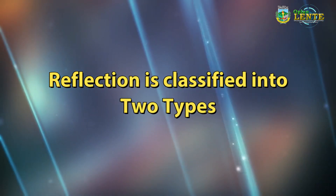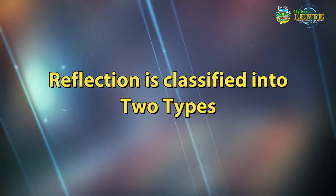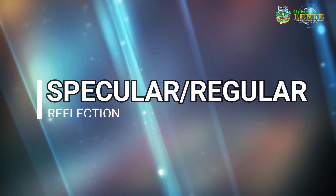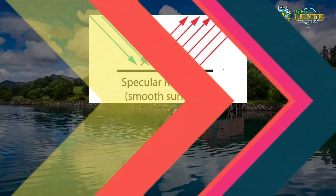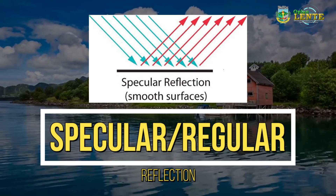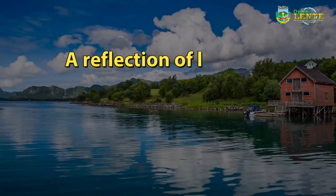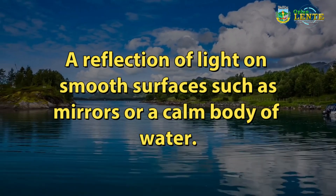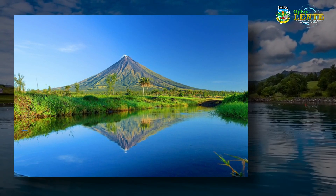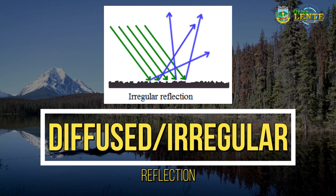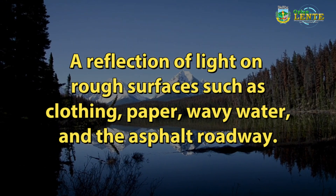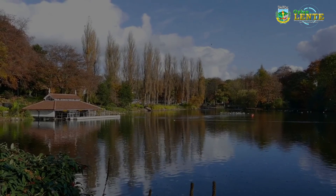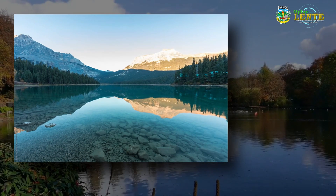This is why reflection is classified into two types. First is specular or regular reflection. Second is diffuse or irregular reflection. Specular reflection is the reflection of light on a smooth surface, such as mirrors or a calm body of water. An example of this is the image of Mayon Volcano on calm water. Diffuse or irregular reflection is the reflection of light on rough surfaces, such as clothing, paper, wavy water, and a rough roadway. An example of this is the image of a mountain on a wavy body of water.